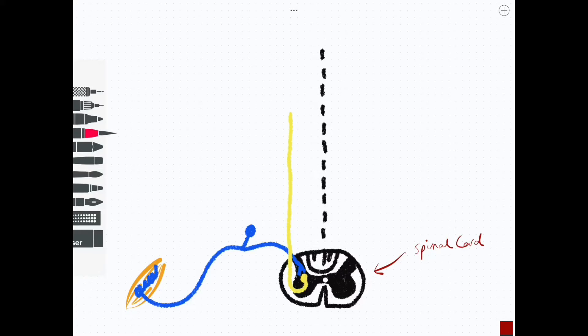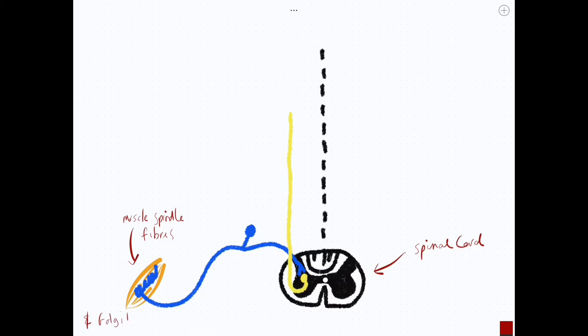Some major differences between this pathway and that one is that this spinocerebellar pathway is ipsilateral and involves two neurons, and the dorsal column medial lemniscal pathway involves three neurons and is contralateral.